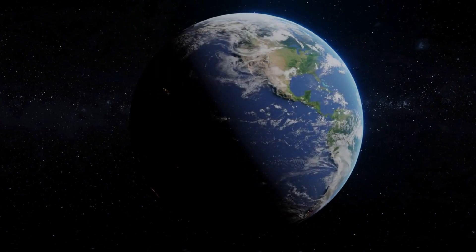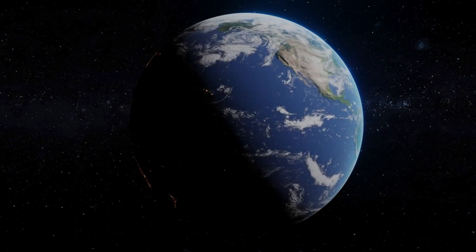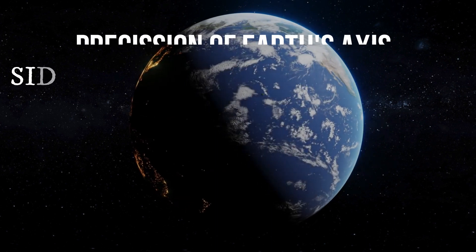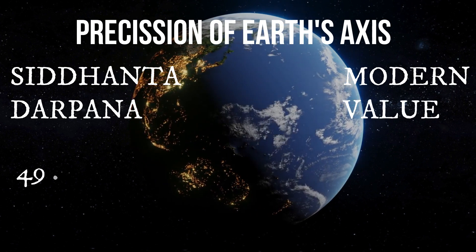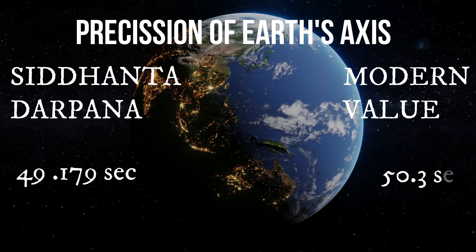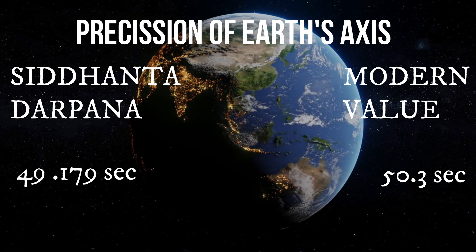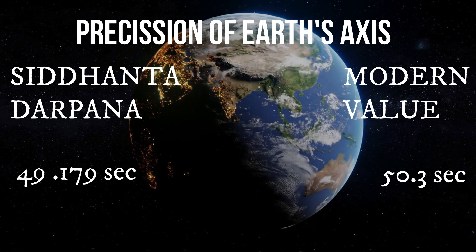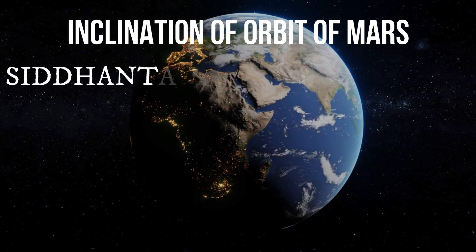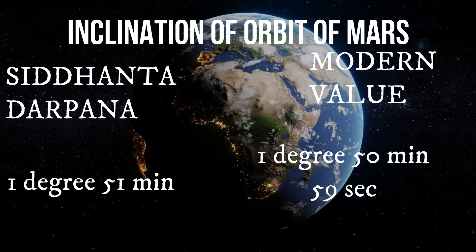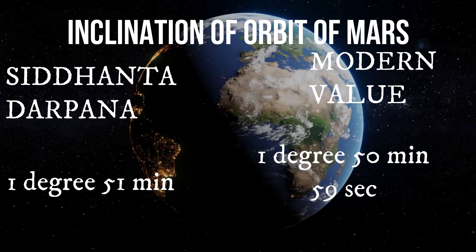The great scientist predicted the precession of Earth's axis to be 49 seconds point 179 while the modern value is 50 seconds point 3 per year. He also gave the most accurate observations about the inclination of the orbits of other planets.